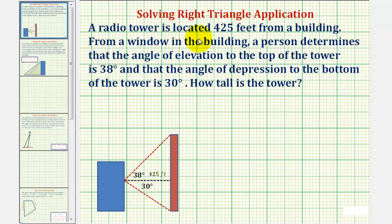A radio tower is located 425 feet from a building. From a window in the building, a person determines that the angle of elevation to the top of the tower is 38 degrees, and that the angle of depression to the bottom of the tower is 30 degrees. How tall is the tower?